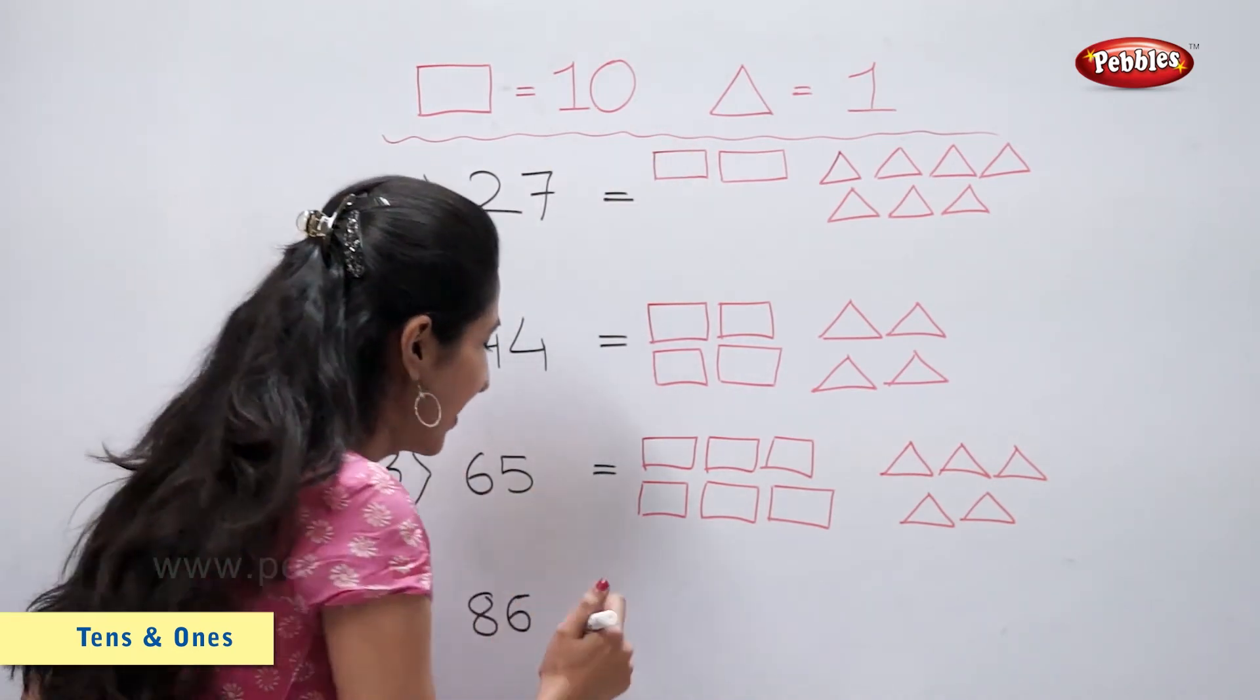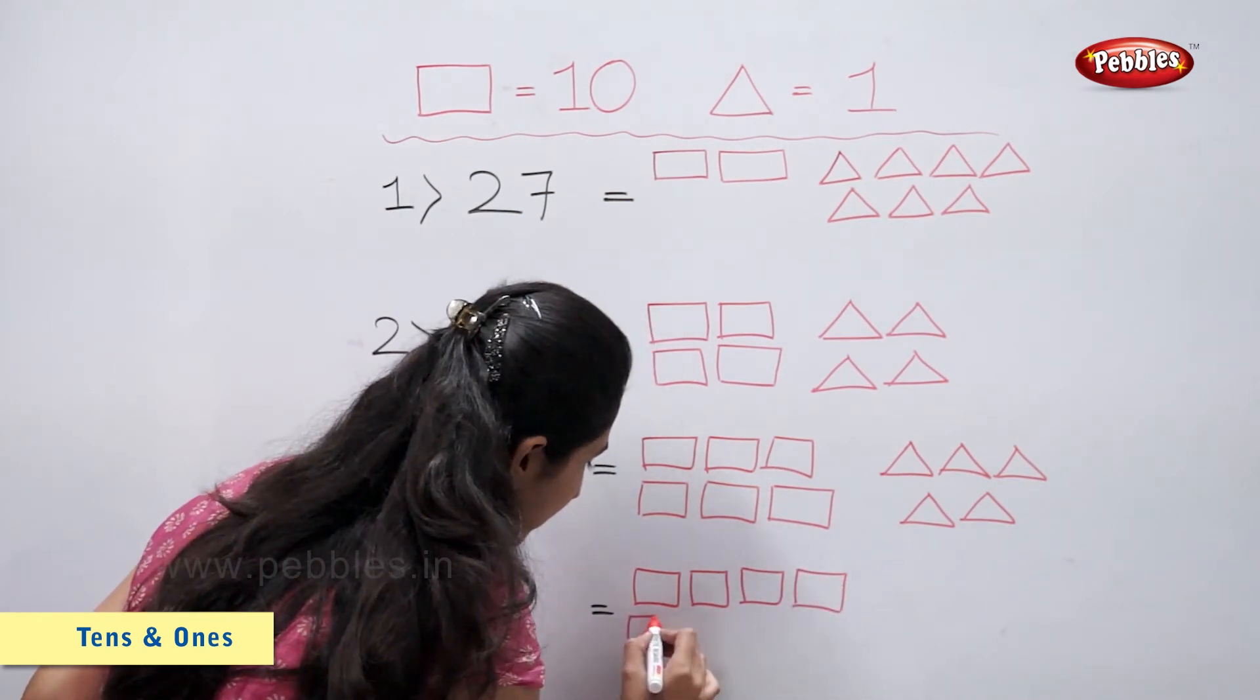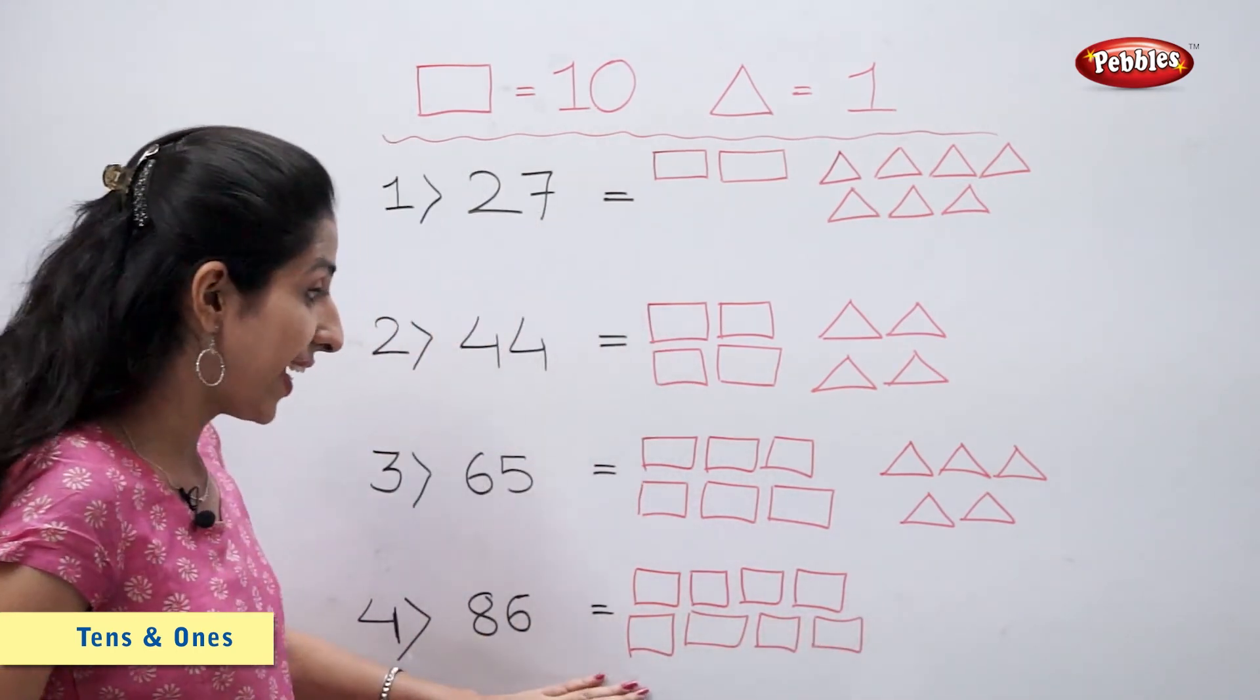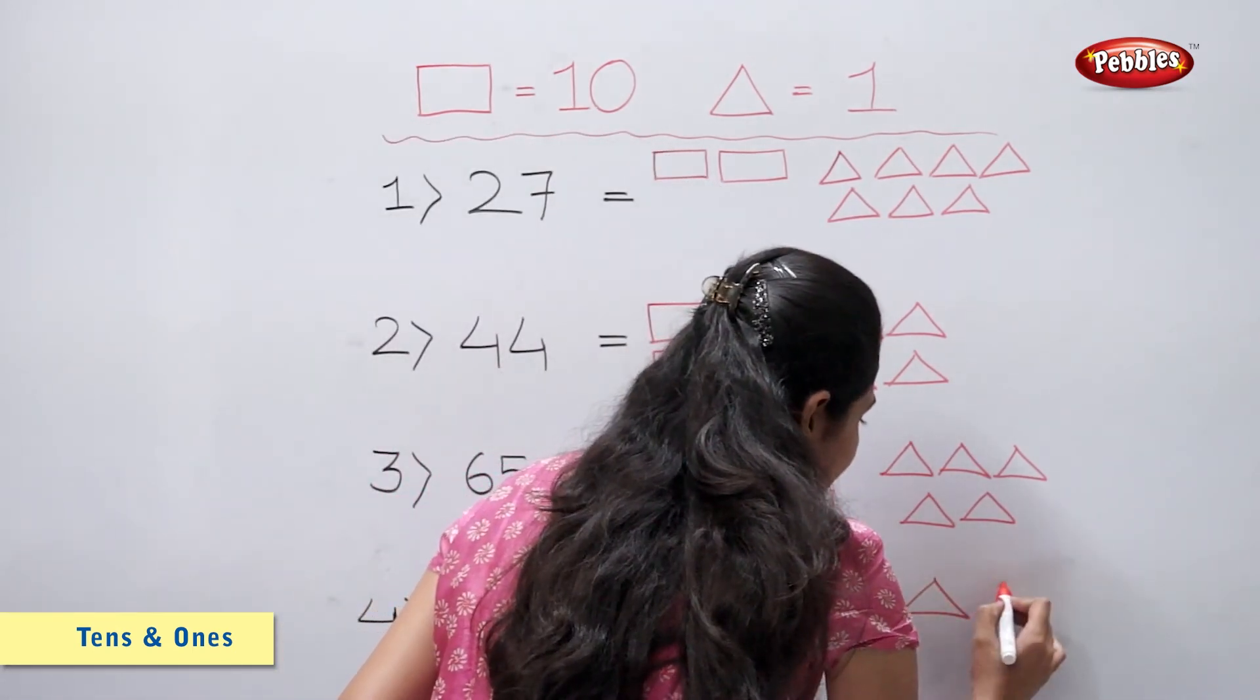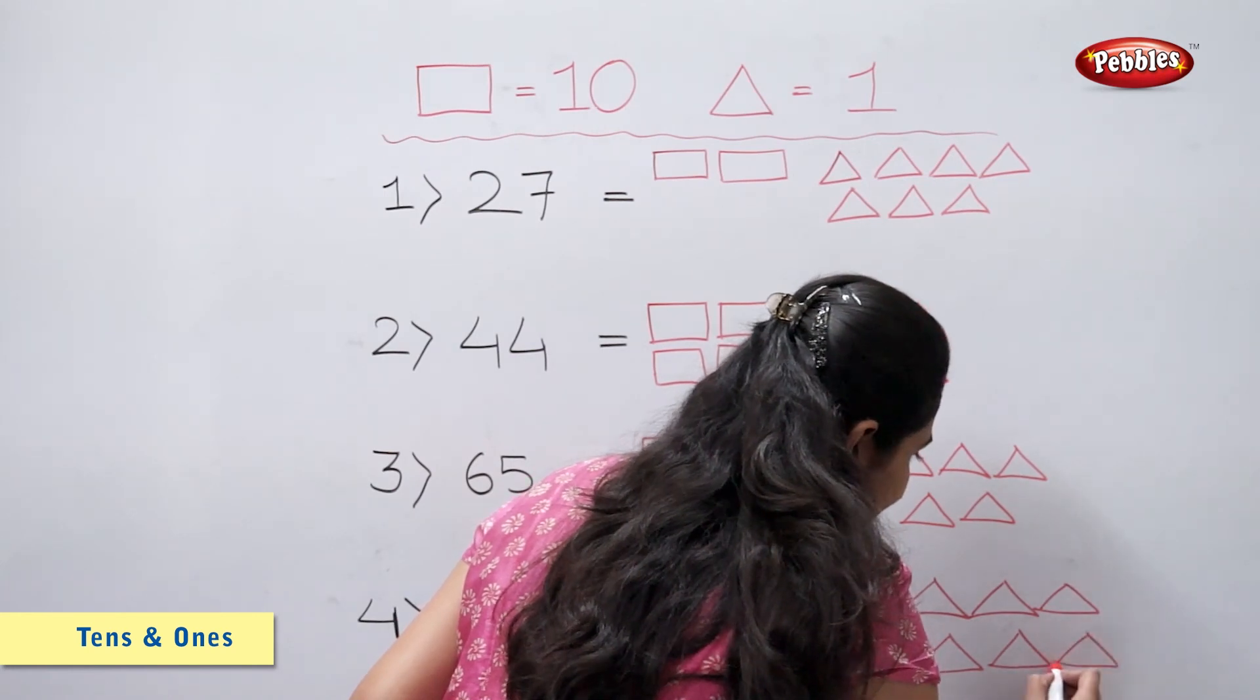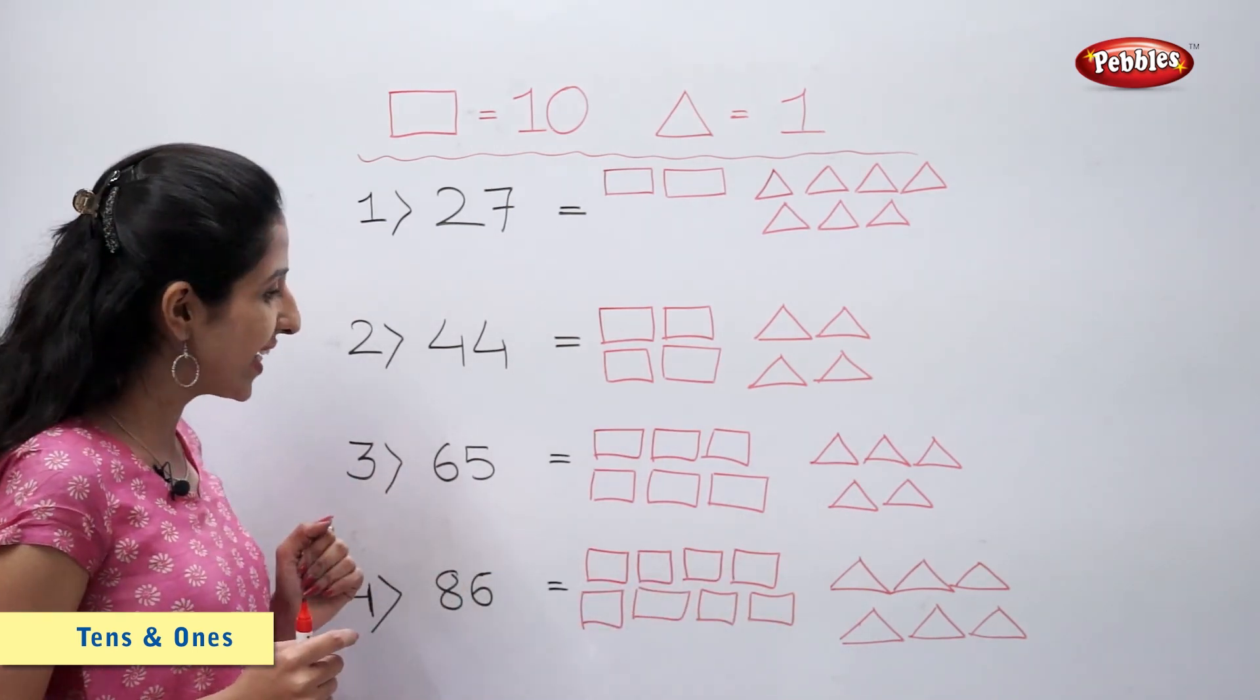Let's draw. 8 rectangles. So 8 rectangles, 6 triangles is number 86.